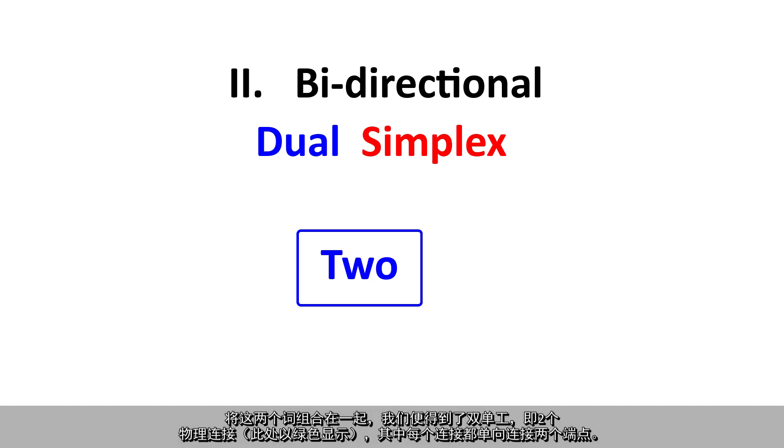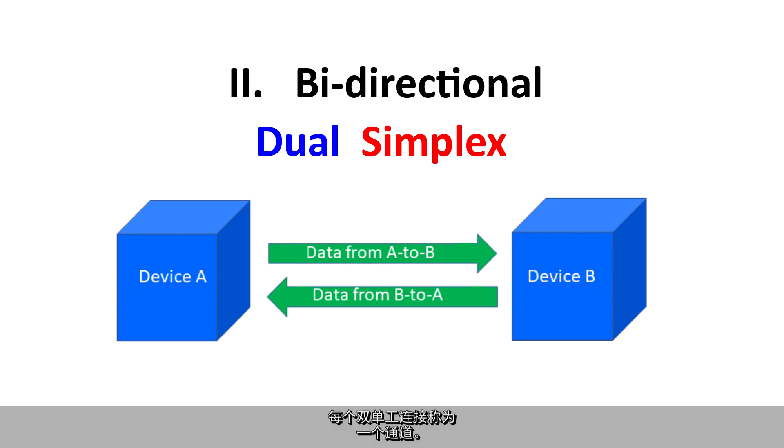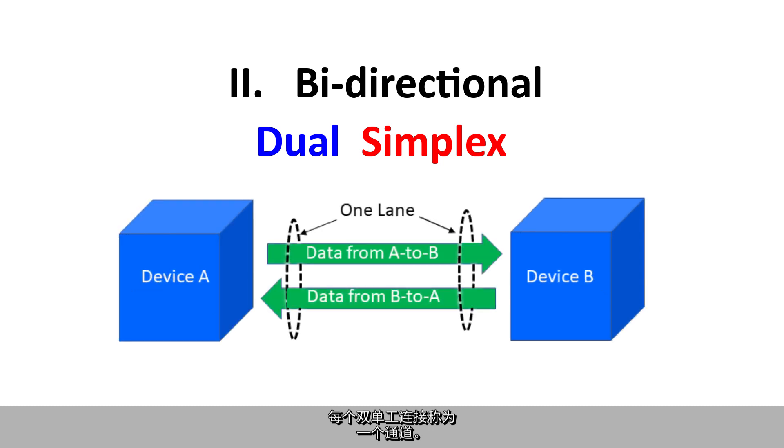So, put that together, and we get dual simplex is two physical connections, which are shown in green here, each of which is one way to or from each endpoint. Each of these dual simplex connections is called a lane.